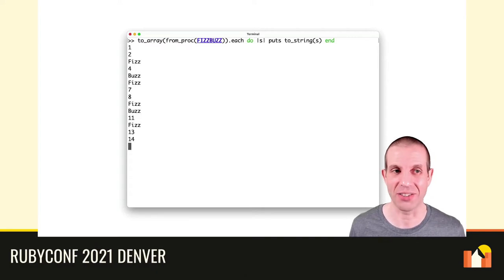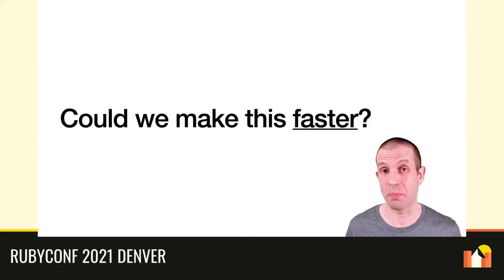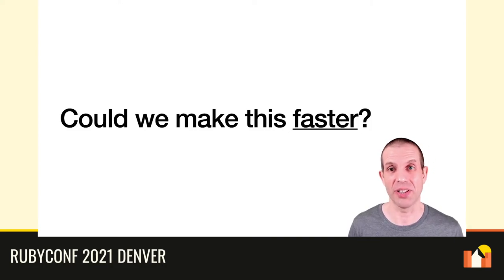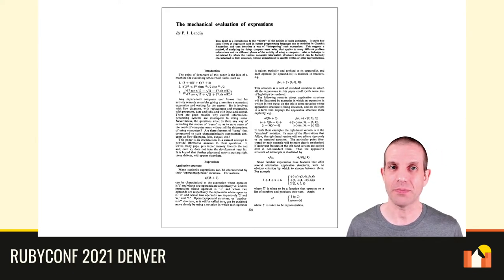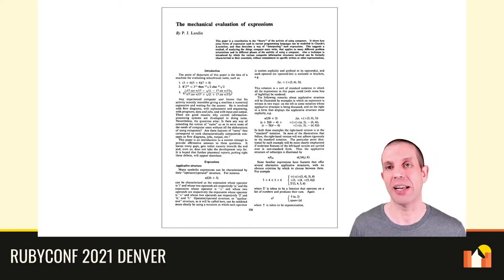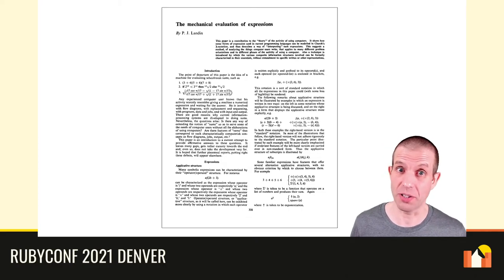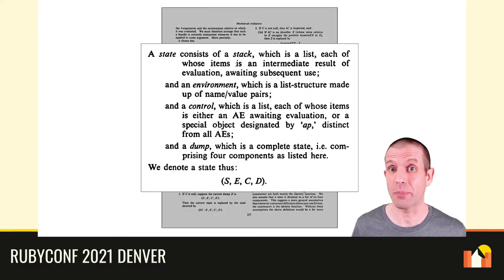Here's a quick demo of converting the FizzBuzz proc into an abstract syntax tree and then interpreting it as an array of strings, which uses our evaluate method to convert the expression. As you can see it works fine, although unfortunately it's a bit slow — it takes almost two hours to finish printing all the numbers up to 100, which isn't super practical. So it's natural to ask, could we make this faster? Our approach takes two hours to execute FizzBuzz versus about 18 seconds for the native Ruby procs. Fortunately, in 1964 a computer scientist called Peter Landin wrote a paper called The Mechanical Evaluation of Expressions, which solved this problem.